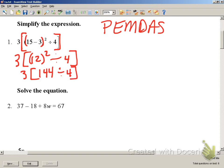Multiplication and division fall next. We have 3 times 144 divided by 4 is 36. Then we multiply 3 times 36 gives us 108. There is our solution for number 1.